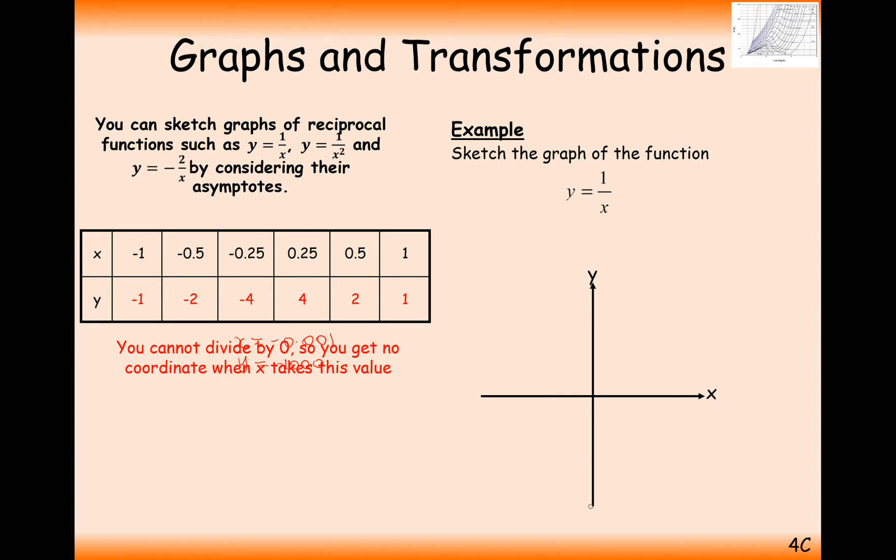We can't divide through by 0 exactly, so this is the first time we've seen a graph that's not continuous. It's going to jump straight from y is a very, very high number down to y is a very, very, very low number when it goes over the x equals 0 line.